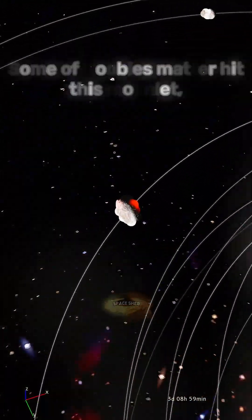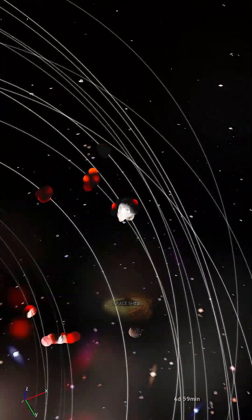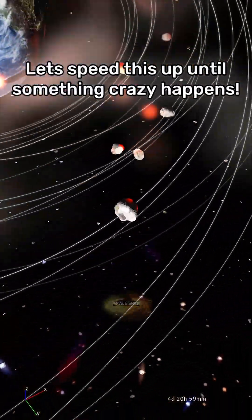Some of Newbie's matter hit this moonlet, giving it a more stable orbit around the Earth. This moonlet Sphinx theoretically can't safely gain mass over time. Let's speed this up until something crazy happens.